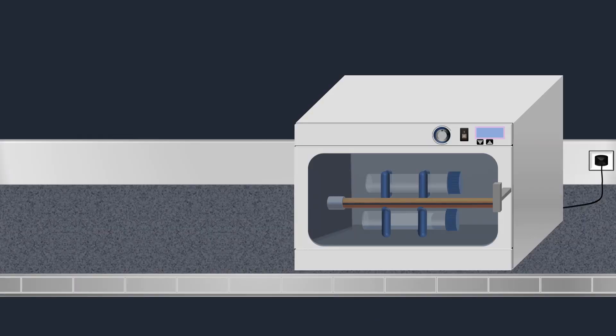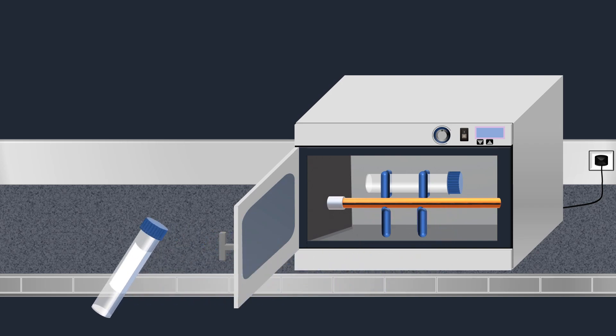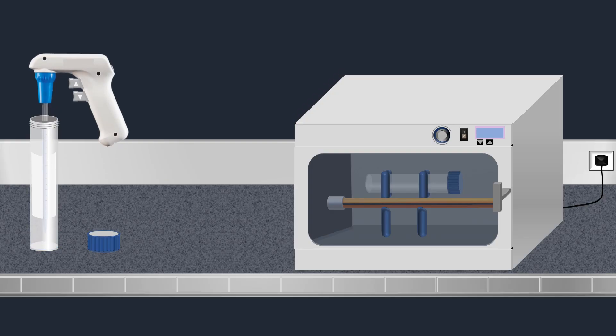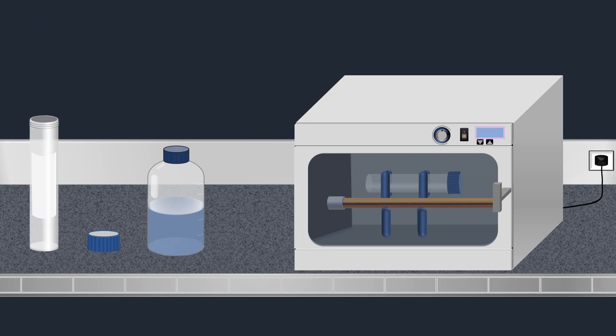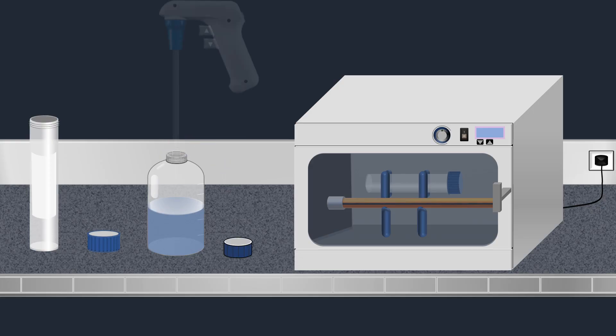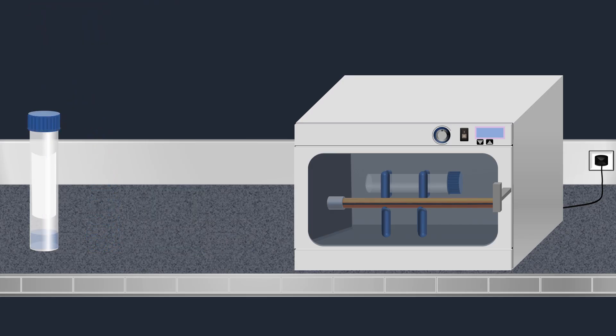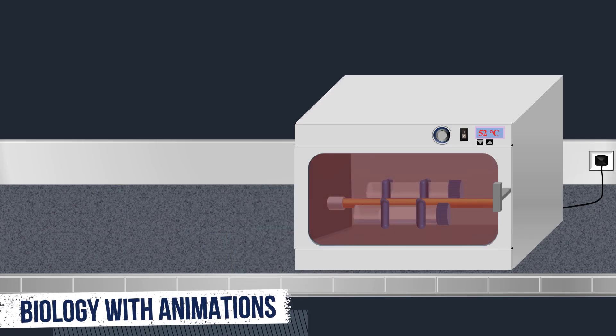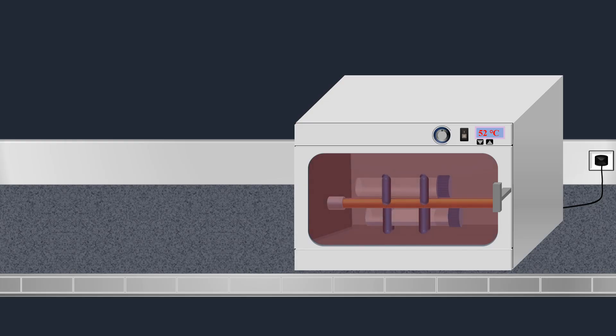After the hybridization of each probe to its target sequence, the hybridization solution is removed. Next, a wash buffer is added into the bottle. Then the membrane is incubated at 52 degrees Celsius for 30 minutes. The washing process is repeated three times to remove unbound and weakly binding probe.